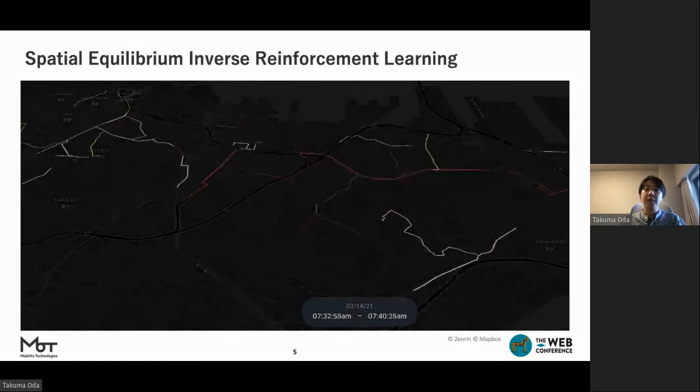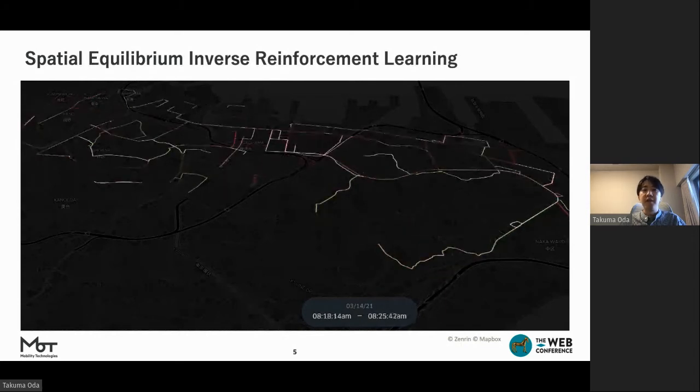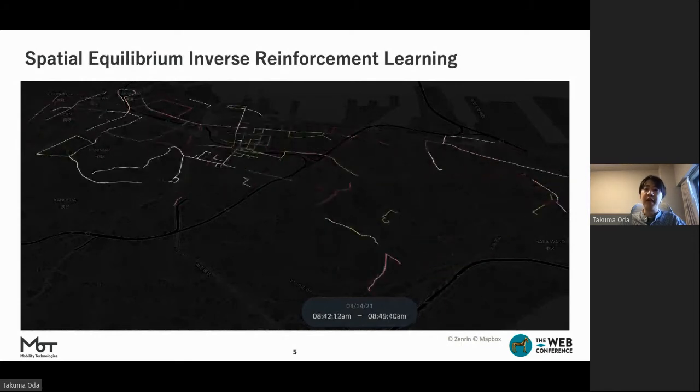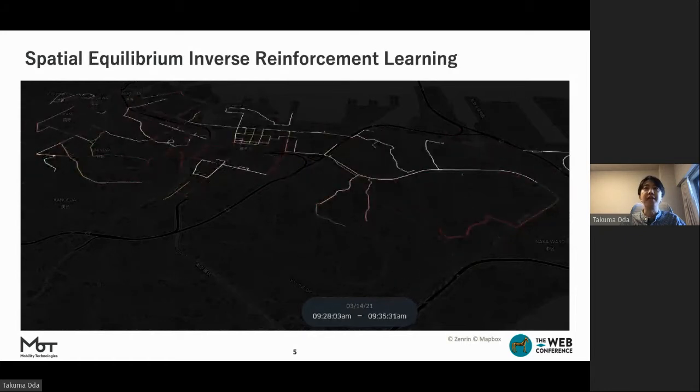In this work, we propose SAIL, Spatial Equilibrium Inverse Reinforcement Learning, the first approach to merge agent behavior modeling and reward learning in equilibrium on a road network for a ride-hailing service.